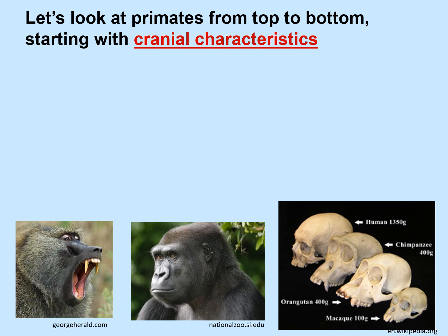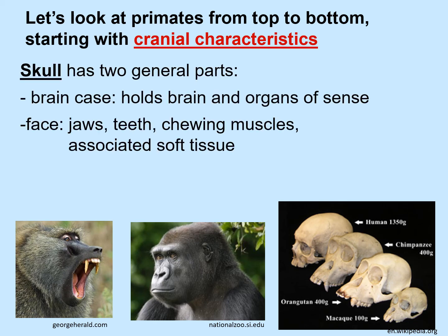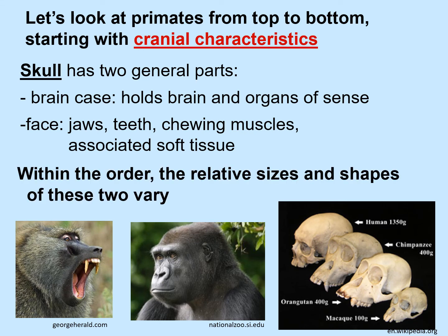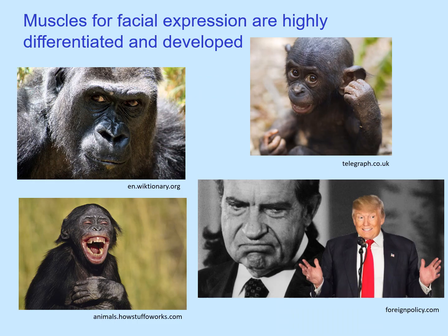Let's look at primates from top to bottom, starting with cranial characteristics — that is, characteristics of the head. The skull has two general parts: the brain case, which holds the brain and organs of sense, versus the face, which includes the jaws, teeth, chewing muscles, and associated soft tissue. Within the order, the relative sizes and shapes of these two vary. Humans have a very large brain and a very flat face, compared to chimpanzees, orangutans, and macaques, which have much longer faces and relatively smaller brains. The muscles for facial expression are highly differentiated and developed among all primates.